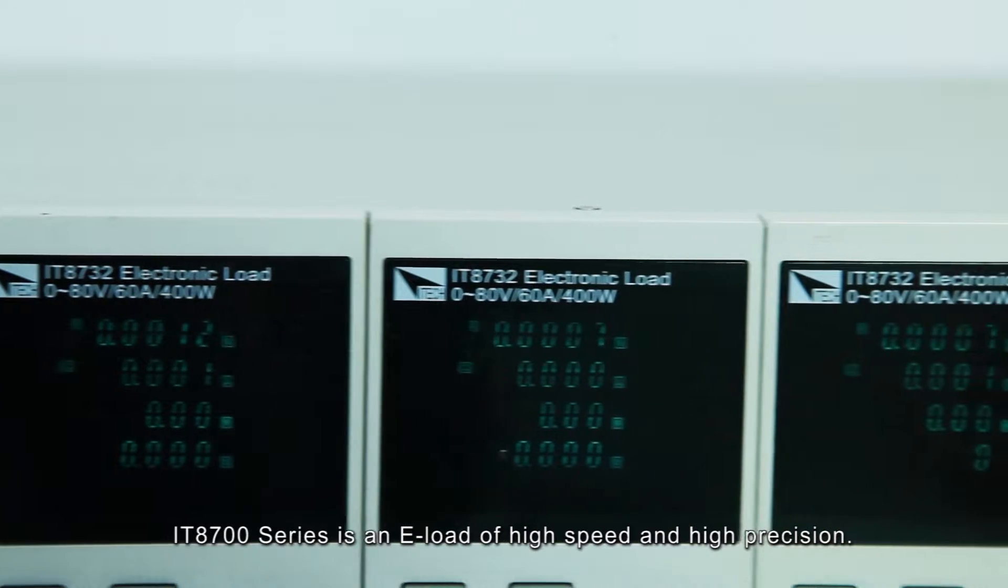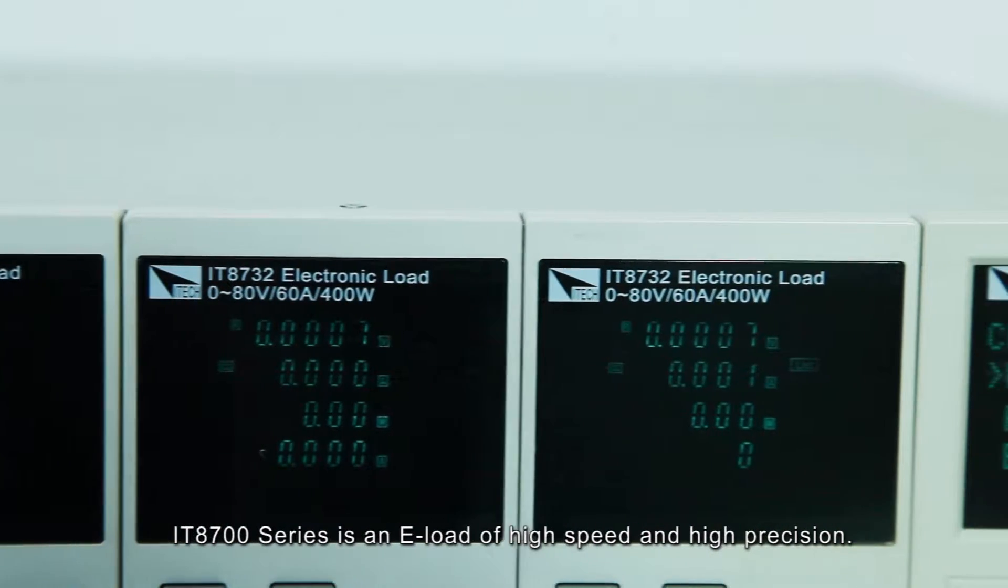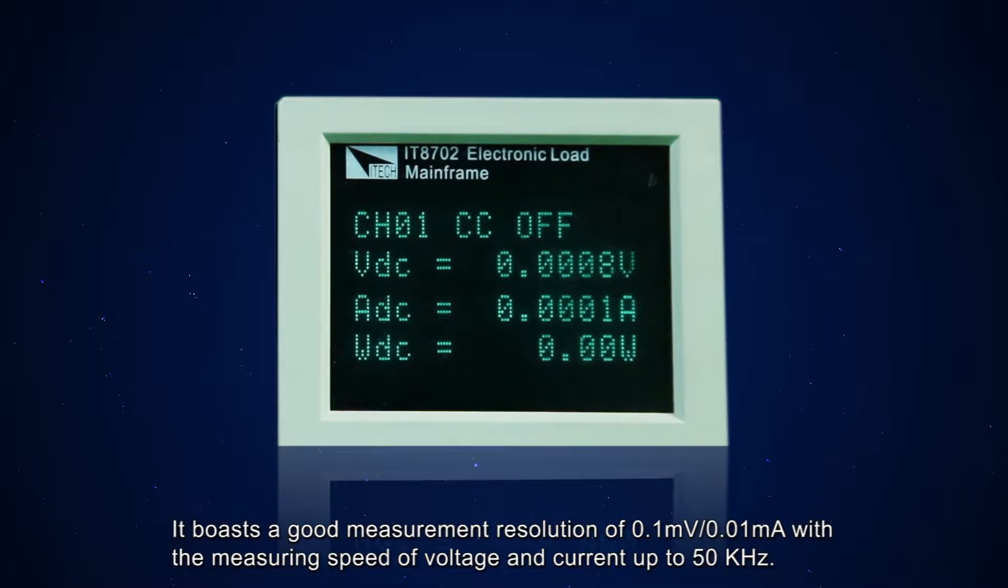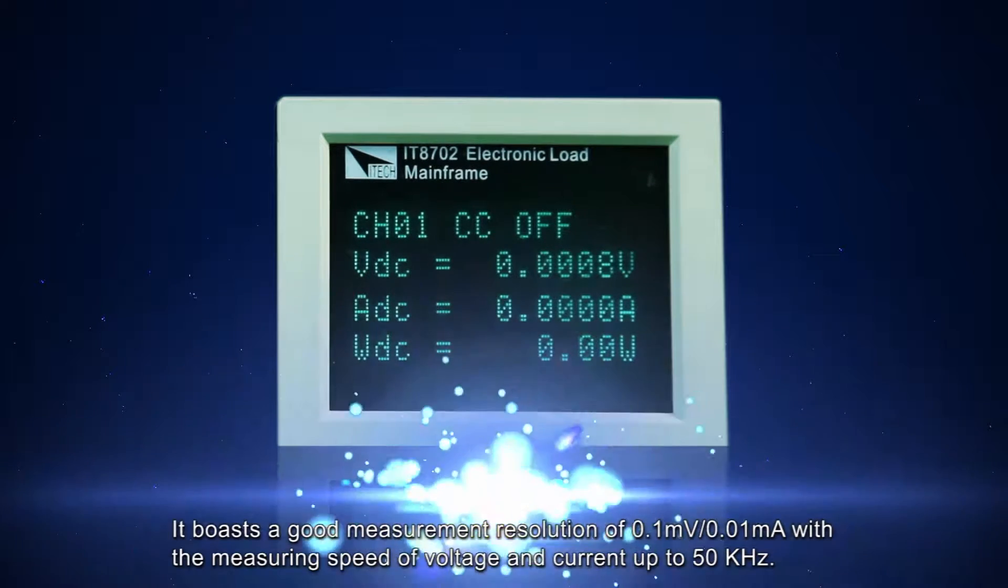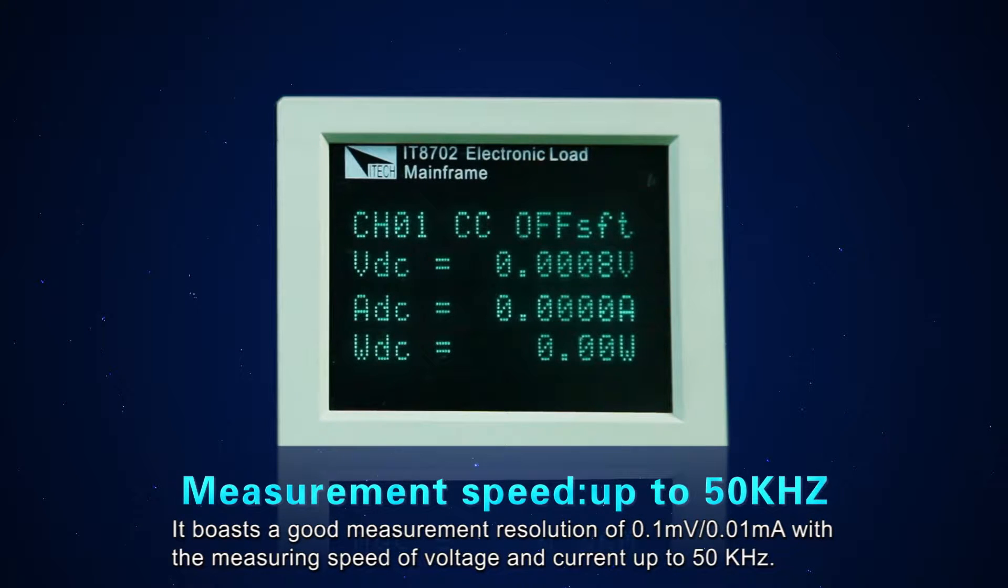The IT8700 series is an ELO with high speed and high precision. It boasts a measurement resolution of 0.1 millivolt and 0.01 milliampere, with measuring speed of voltage and current up to 50 kilohertz.